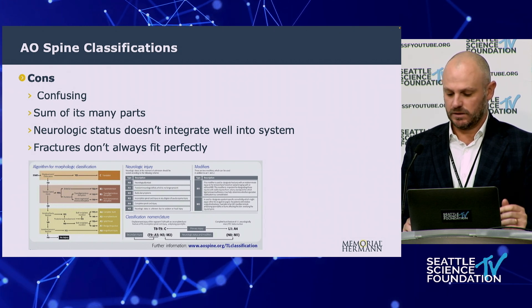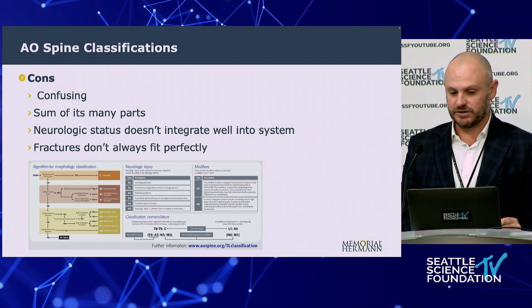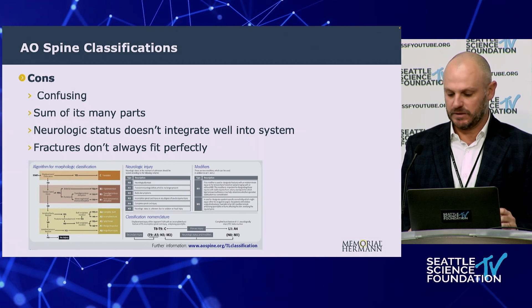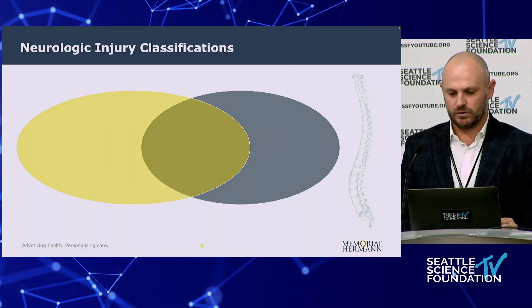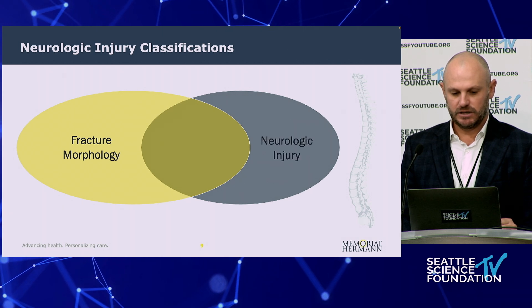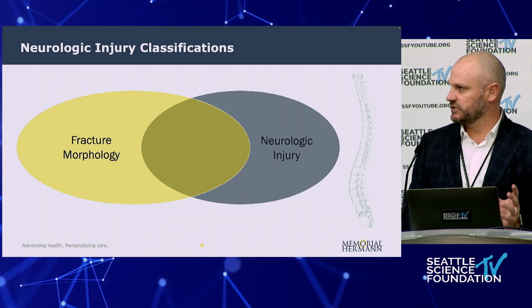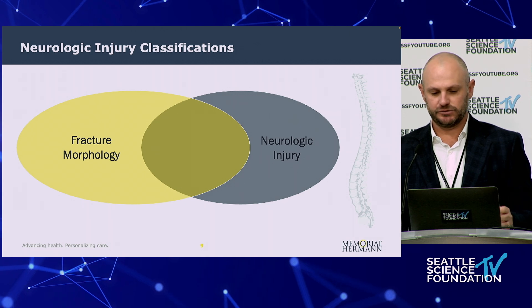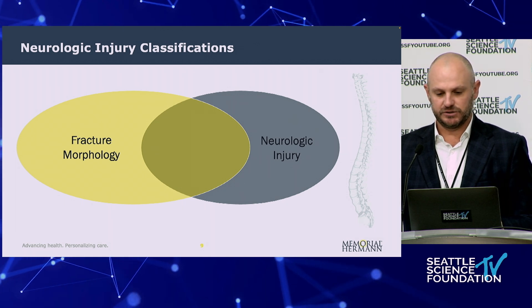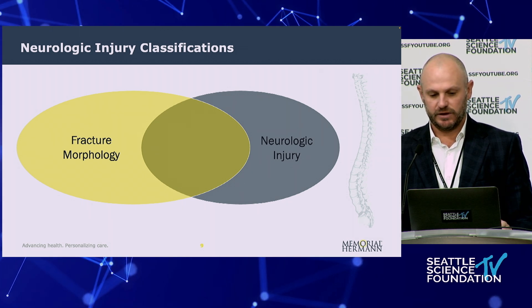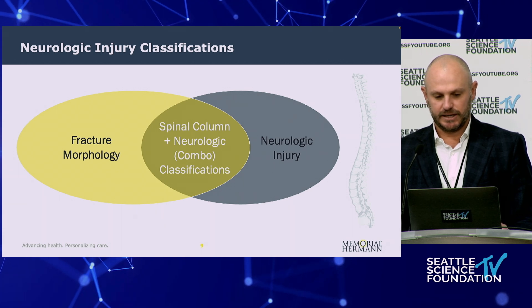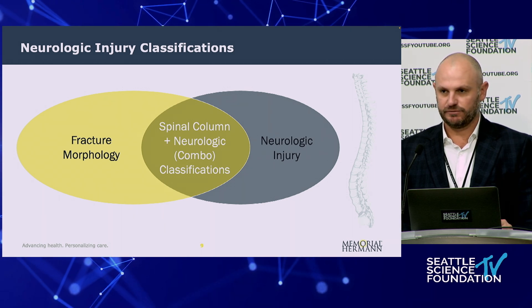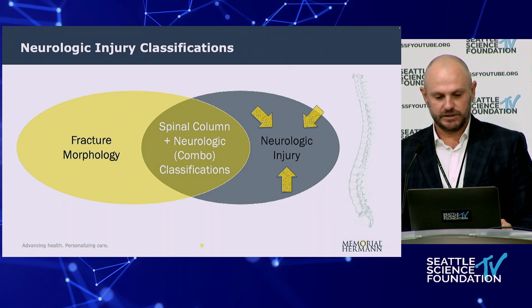Fractures are very heterogeneous and may not always fit exactly into a particular category in that classification. The classification systems we use currently for spinal cord injury include neurologic injury classification systems, fracture morphology systems, and a neurologic and fracture morphology combo classification.